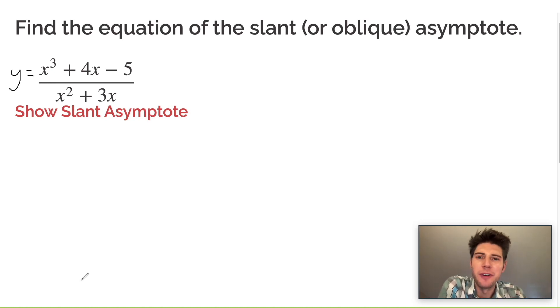Hey guys, welcome to this video. We want to find the equation of the slant asymptote. It could also be known as an oblique asymptote. So this is a rational equation, and the reason we know it's going to be a slant asymptote is because the degree on top is greater than the degree on bottom.